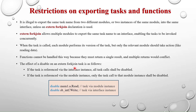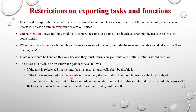Those are the two ways to disable extern fork join methods. If an interface contains an extern fork join task and no module connected to that interface defines the task, then any call to that task shall report a runtime error and return immediately with no effect. So if you declare a method with extern fork join but do not implement that task in the module, it will lead to a runtime error. If you use extern fork join with a method name, you must implement it in the corresponding module.